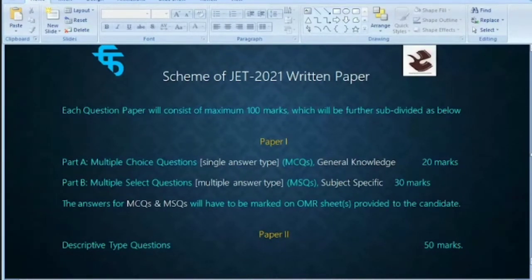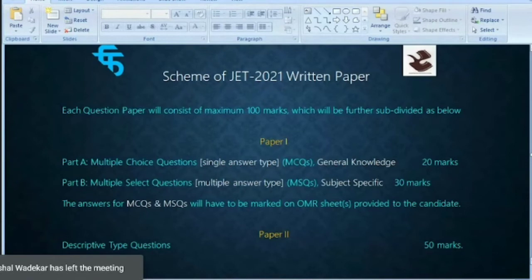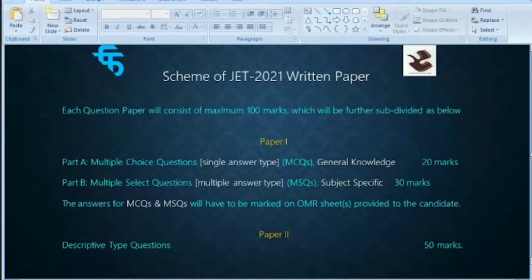There will be 15 questions, each worth 2 marks. So Part A is 20 questions at 1 mark each, and Part B is 15 questions at 2 marks each. The answers for MCQs and MSQs will have to be marked on OMR sheets provided to you at the centre.